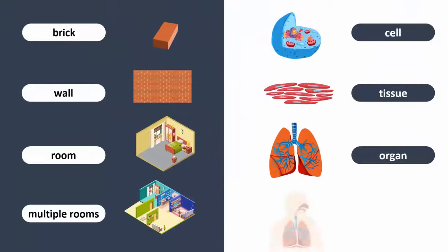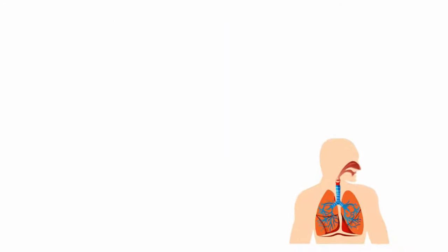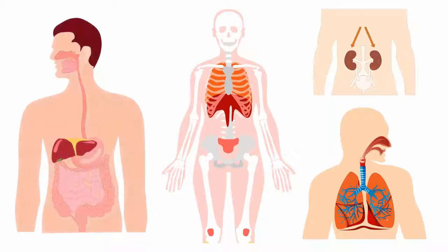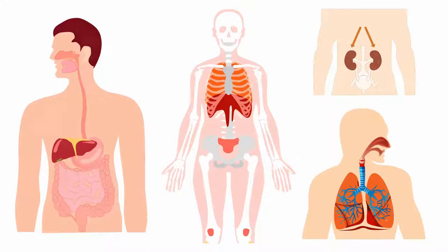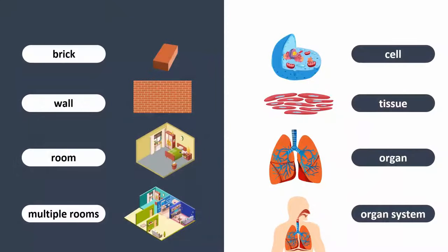Similarly, different organs work together to make an organ system that carries out a specific process. Living things are made up of different organ systems functioning at the same time. This order of making up an organism is called the level of organization.